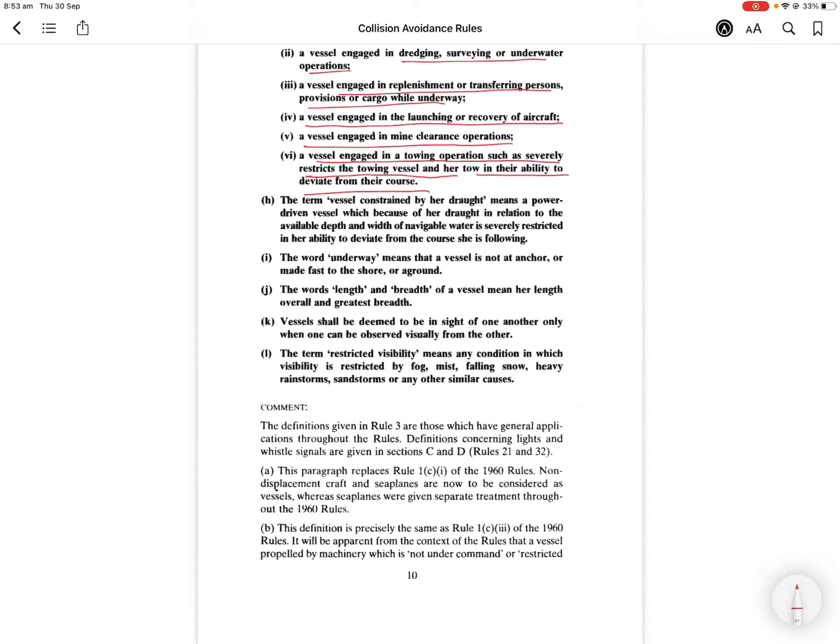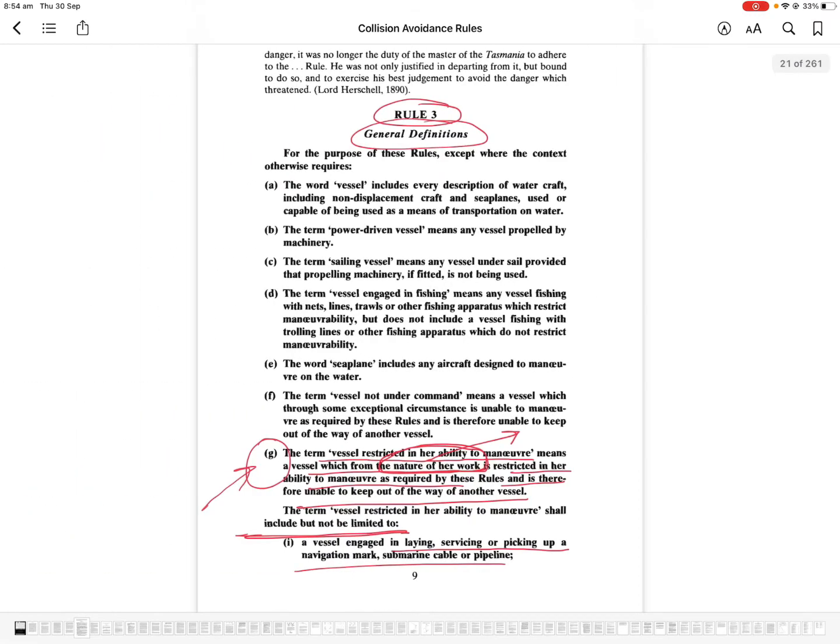Unlike the examples which are given in Rule 3G, heaving anchors is a typical, ordinary, regular activity for a vessel. Now, had the drafters intended to include such an ordinary or highly ordinary activity of heaving anchors in the nature of work? Is heaving anchors included in the nature of the work? No, it is not. Nature of the work does not include heaving anchors as per the definition.